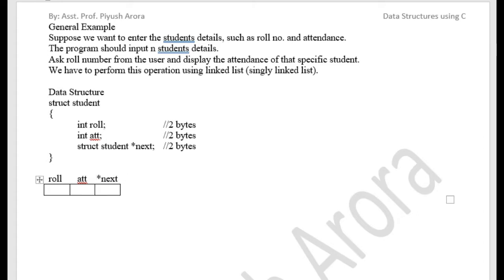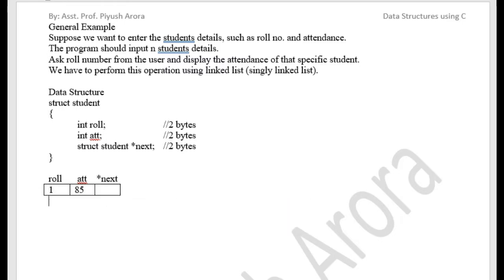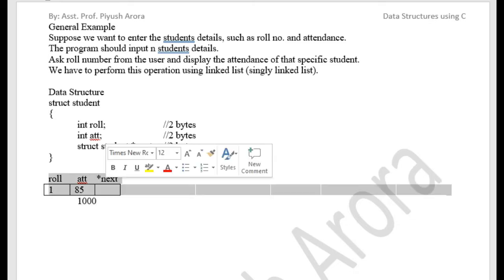We need to input the role number here from the user — for example, 1. The student's attendance is, for example, 85 out of 100. Every node must have some address. For example, we take its address as 1000. Memory can be allocated anywhere for any node. So address 1000 is assigned, and this becomes our first node. The first node is always called start.